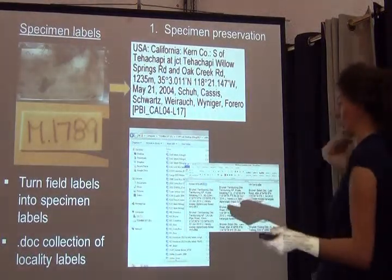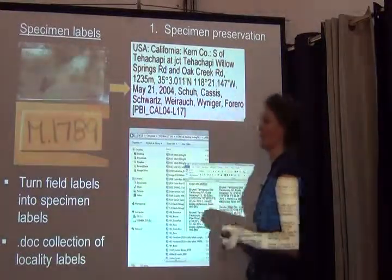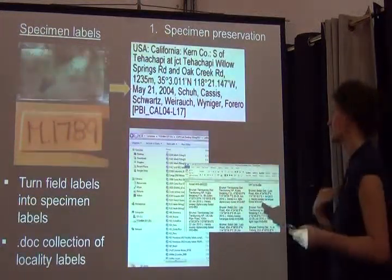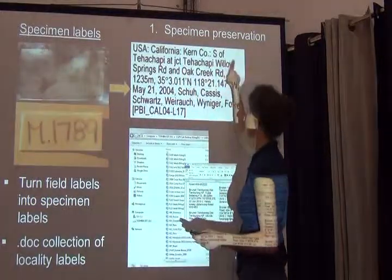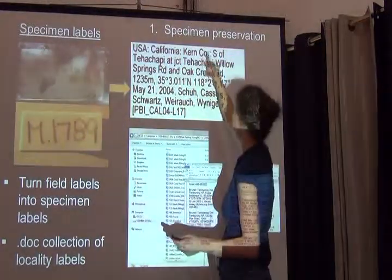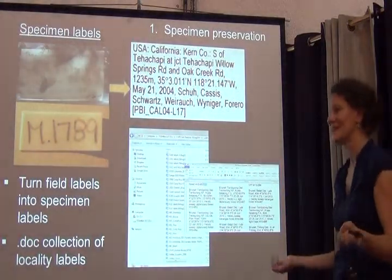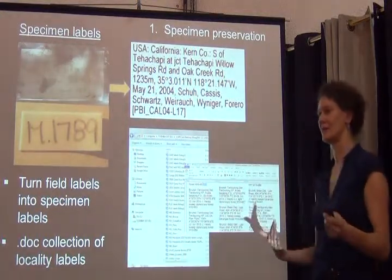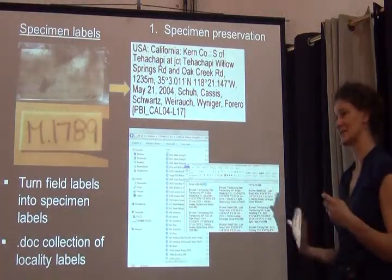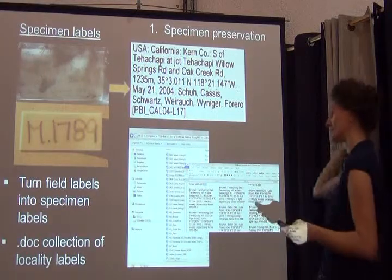In many cases people will have electronic files with their locality information typed up. You want to have something standardized-looking. One thing you'll also see this afternoon: if you're collecting in California you understand it's important to put the full locality. You have the exact locality, the county, and California — and you might think everyone knows where California is, so why put the country? But when you look at other collections and areas you're not familiar with, it's really important to include the country on labels. In older collections you rarely see this, but it really speeds up the entire data entry process.